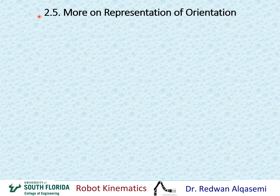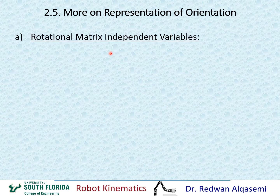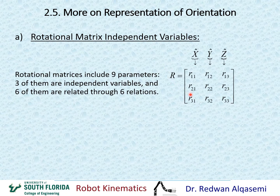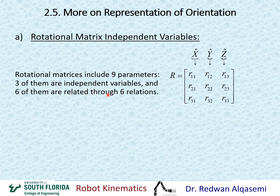Let's talk about a new topic: more on the representation of orientation. We're going to start by discussing the rotational matrix independent variables. For every rotation matrix, we have nine elements. The first vector represents the X axis, the second represents the Y axis, and the third represents the Z axis. Of these nine parameters, three are independent variables and six are related through six relationships.